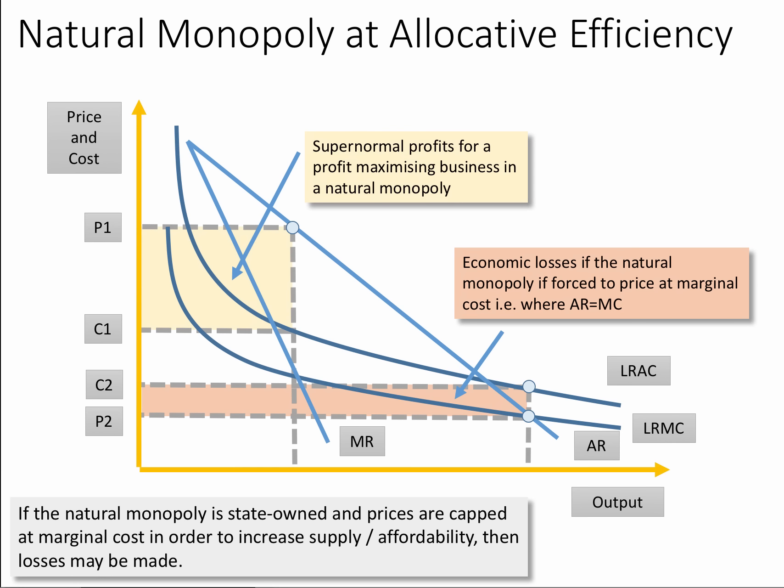A big debate in monopoly is the extent to which monopolies achieve economies of scale. A natural monopoly has falling long run average costs across the entire range of output, with marginal cost lying below average cost. If you're a profit-maximising business you can make a supernormal profit at price P1, but if forced to price at marginal cost — particularly as a nationalised industry — you will make a loss. So there is a potential trade-off between profitability and efficiency.